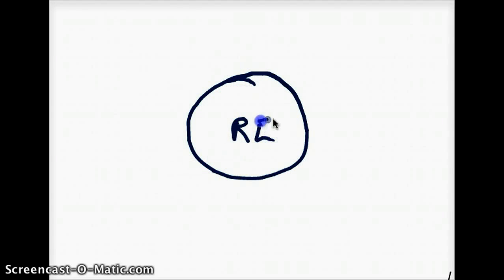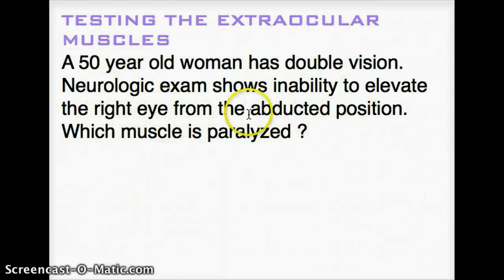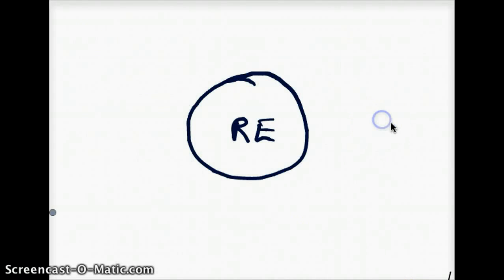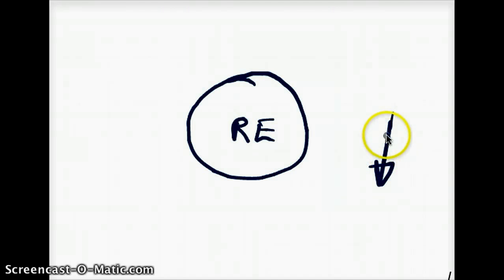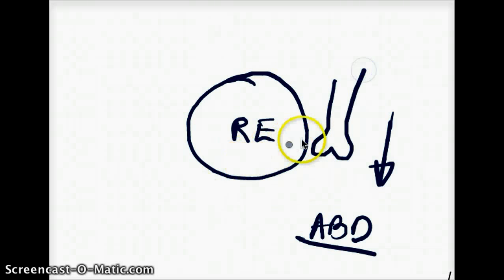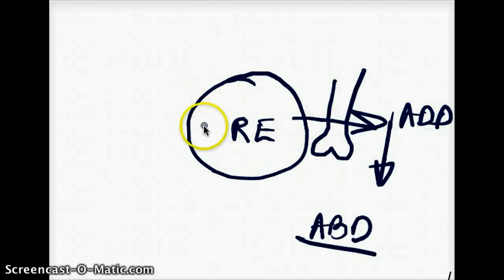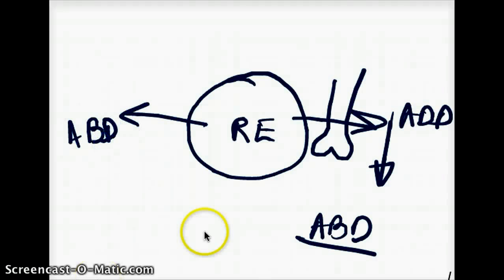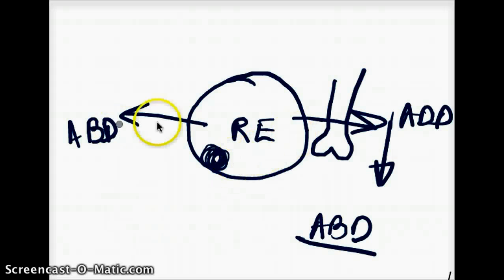So imagine this is our right eye. The right eye is abducted and has inability to elevate. The eye is going to be depressed because it cannot elevate. Abduction means that it is moved away from the body. So if this is our right eye, this would be our nose — this direction would be adduction, and this would be abduction. So the eyeball is depressed and abducted.